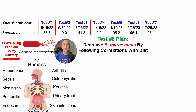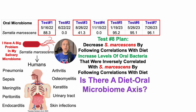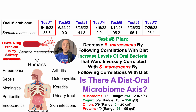So for test number eight, the plan was to potentially decrease Serratia by following correlations with diet. Could I also increase levels of bacteria that are inversely correlated with Serratia by following dietary correlations? There were eight bacteria that fell into that category. I'm basically addressing the question: is there a diet-microbiome axis? So for the foods significantly correlated with those nine bacteria, we can see the ones with the greatest overlap.